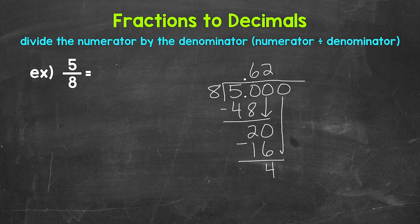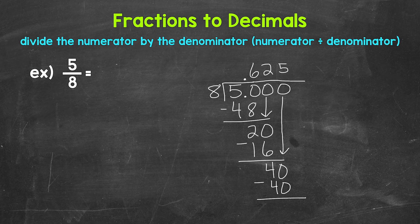Let's use another zero that we can bring down. Now we have 40 — 40 divided by 8, which is 5. So we put 5 up here. Multiply: 5 times 8 is 40. Subtract: 40 minus 40 is 0. Now we have that clean cut zero at the bottom and nothing else to bring down. So we are done.